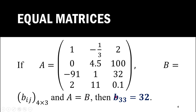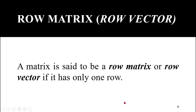Now, b_33 is the element in matrix B belonging to the third row and third column. So, it will be equal to the element in matrix A belonging to the third row and third column, that is 32. So, b_33 = 32.